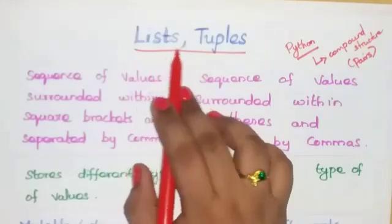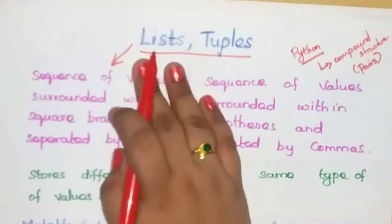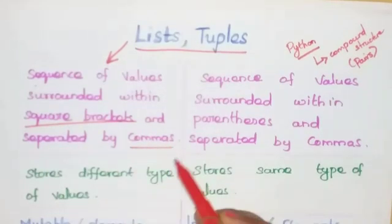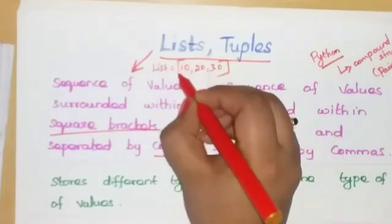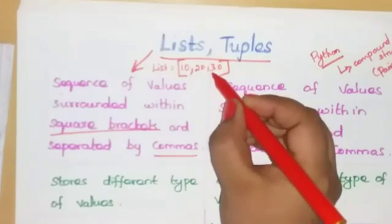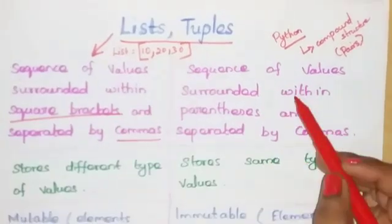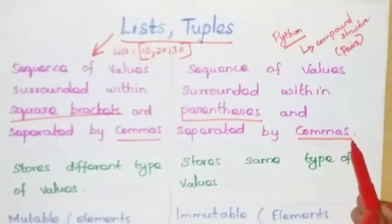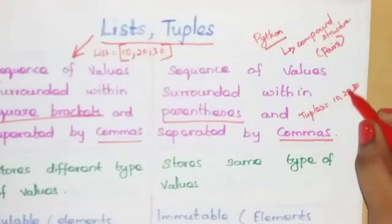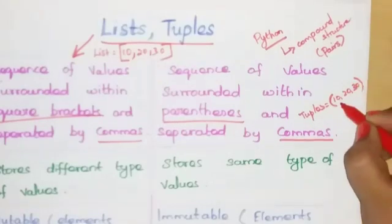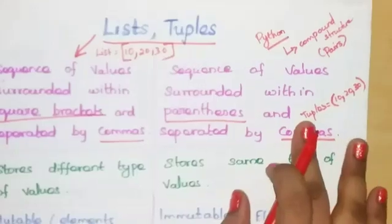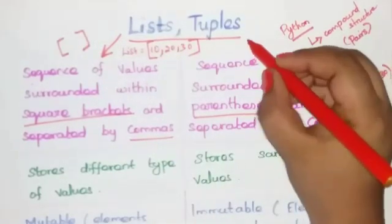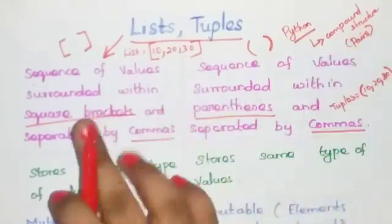Now let us see about lists and tuples. A list is a sequence of values surrounded within square brackets and separated by commas. A tuple is a sequence of values surrounded within parentheses and separated by commas.